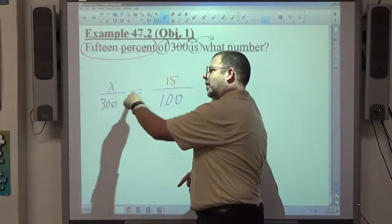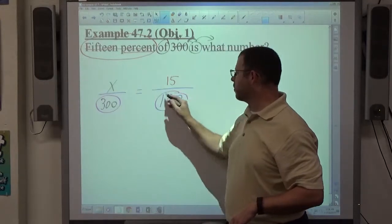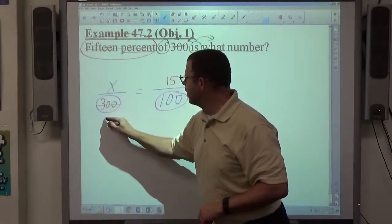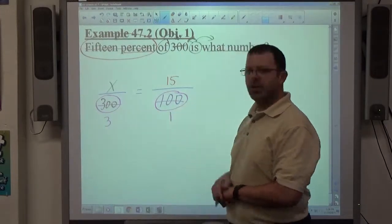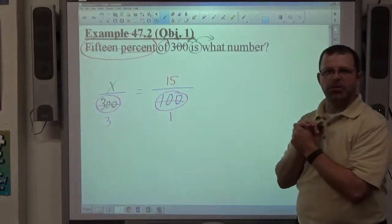The only reductions that are legal would be diagonal reductions. This number, horizontally positioned in a proportion, fraction equals fraction, you can reduce that way. Divide both numbers by 100. What we're left with is 3 and 1 don't reduce, 15 and 1 don't reduce, so we can't reduce anymore.